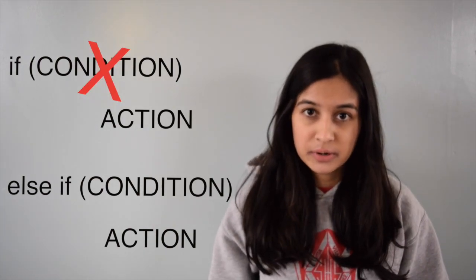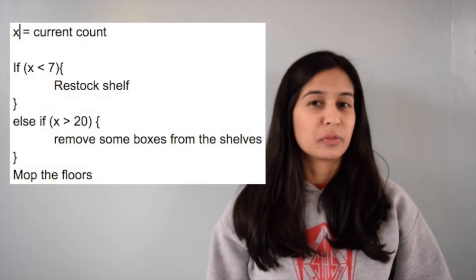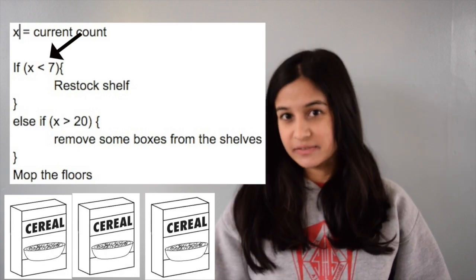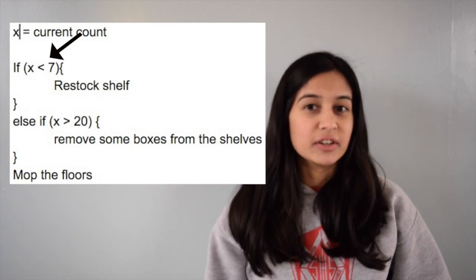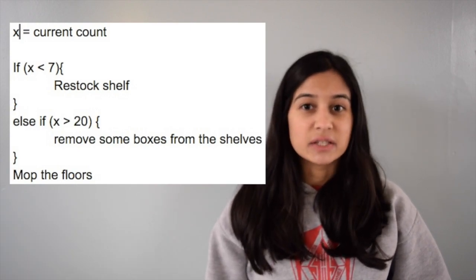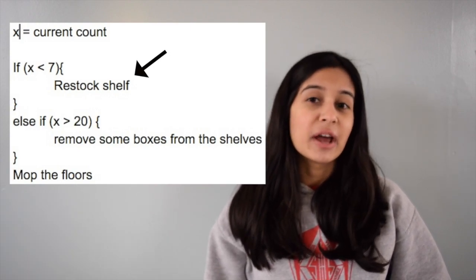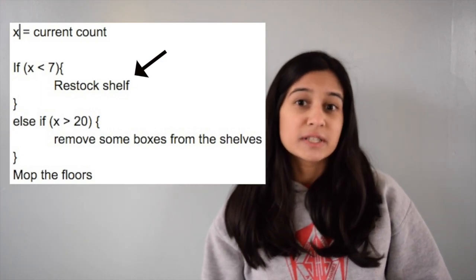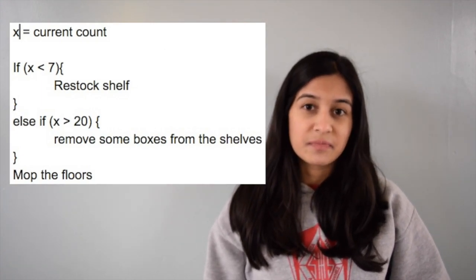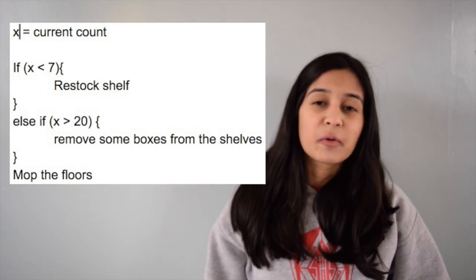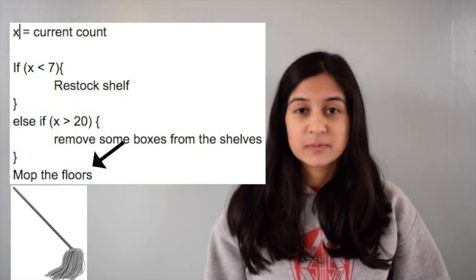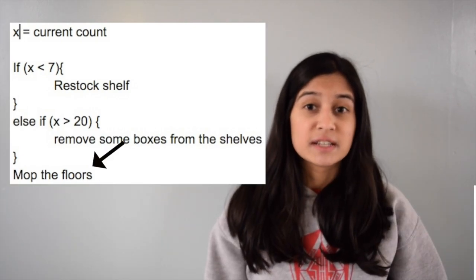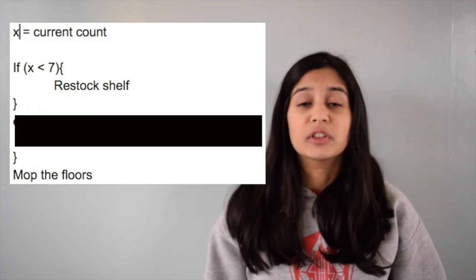Looking at some more pseudocode, suppose we counted three boxes. Approaching the if statement, three is less than seven, so we are going to carry out the action specified in the if statement — we're going to restock the shelves. After that, we're going to jump straight to mopping the floors. As you can see, our else-if statement wasn't even looked at.